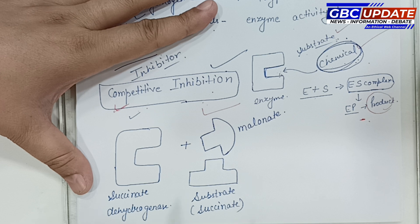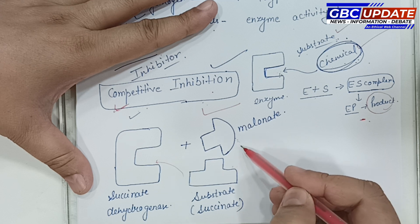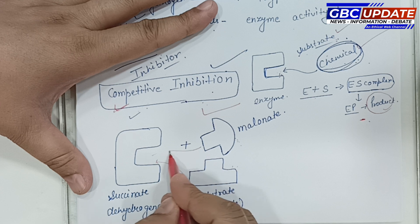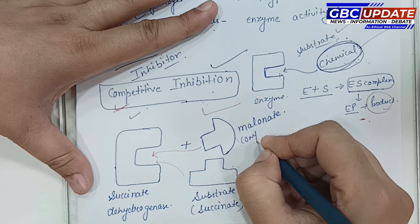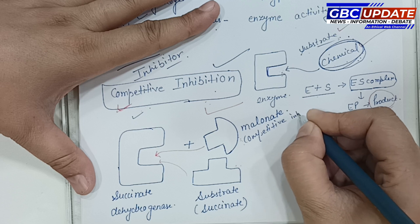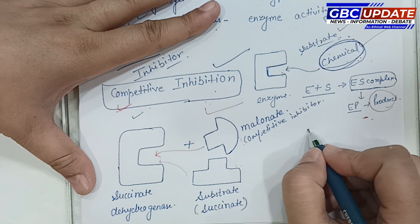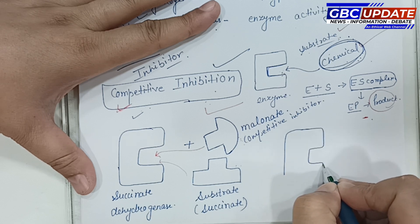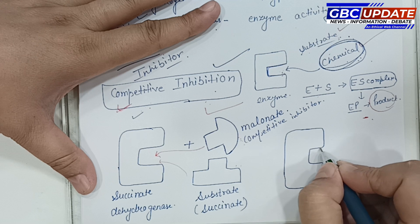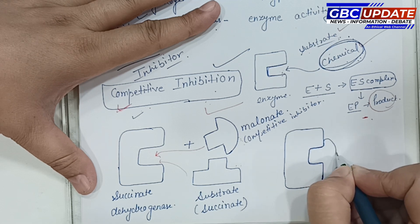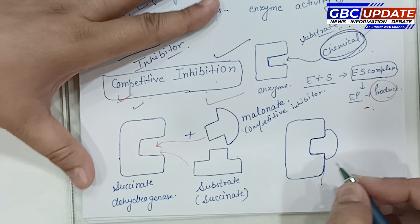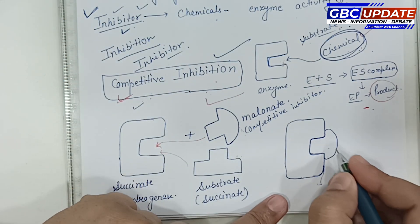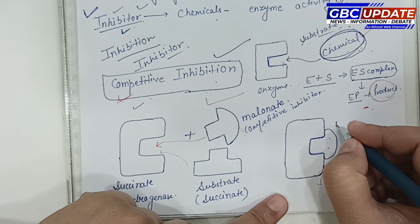Malonate, which is the competitive inhibitor, binds to the active site of the enzyme instead of the substrate. This forms an enzyme-inhibitor complex rather than an enzyme-substrate complex. The inhibitor blocks the active site, so the substrate cannot connect there, resulting in no product formation.